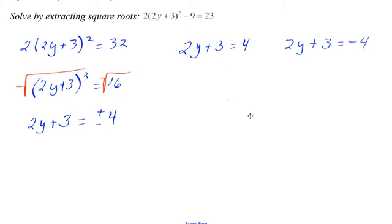Alright, then we'll break it up into two sides, two answers. One of them is positive 4, one of them is negative 4. And then go ahead and subtract 3 from both sides, and then divide by 2, and you have your two answers.